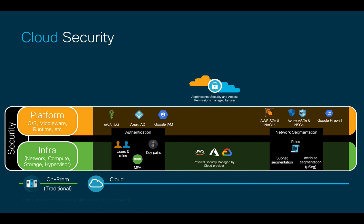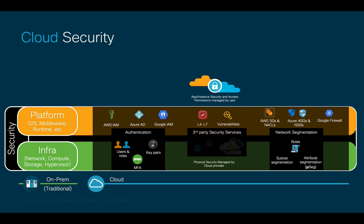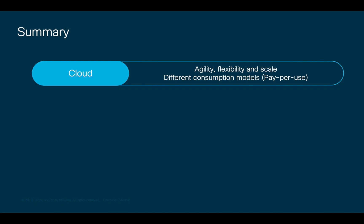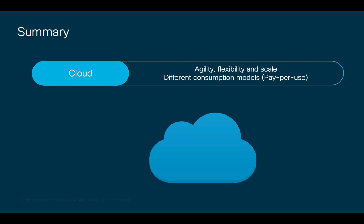Just like on-premises, having L4-L7 services and advanced security and vulnerability detection features may also be needed. Although some of these may be provided by cloud-native services, organizations may choose to implement their own solutions directly on the cloud.